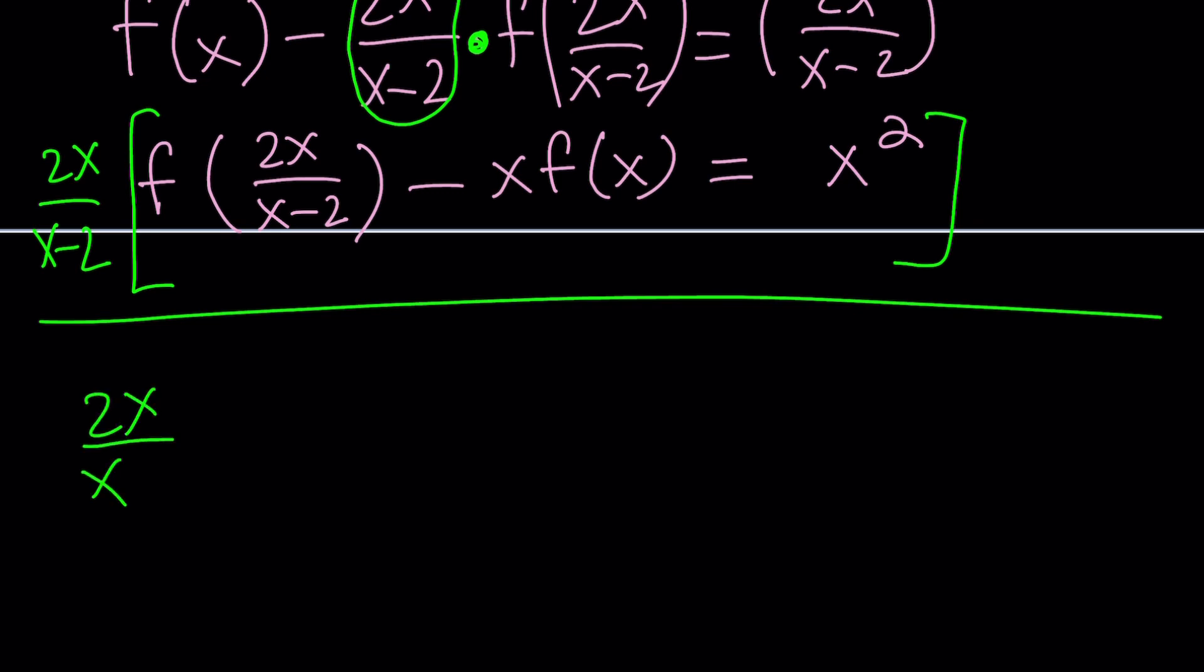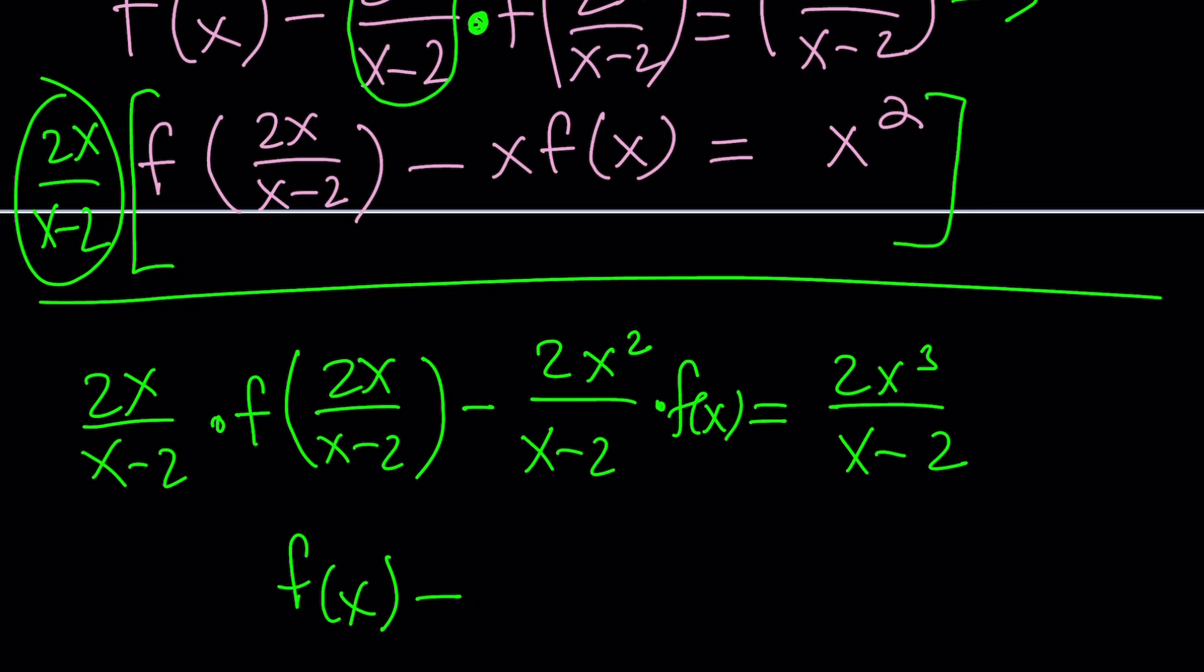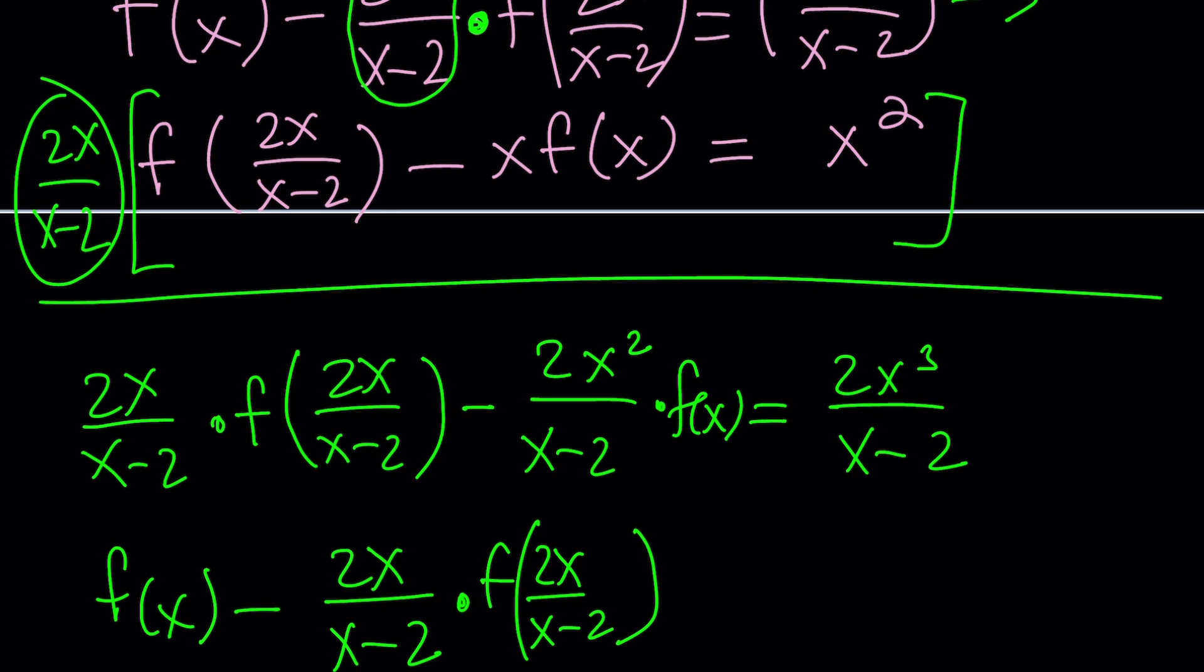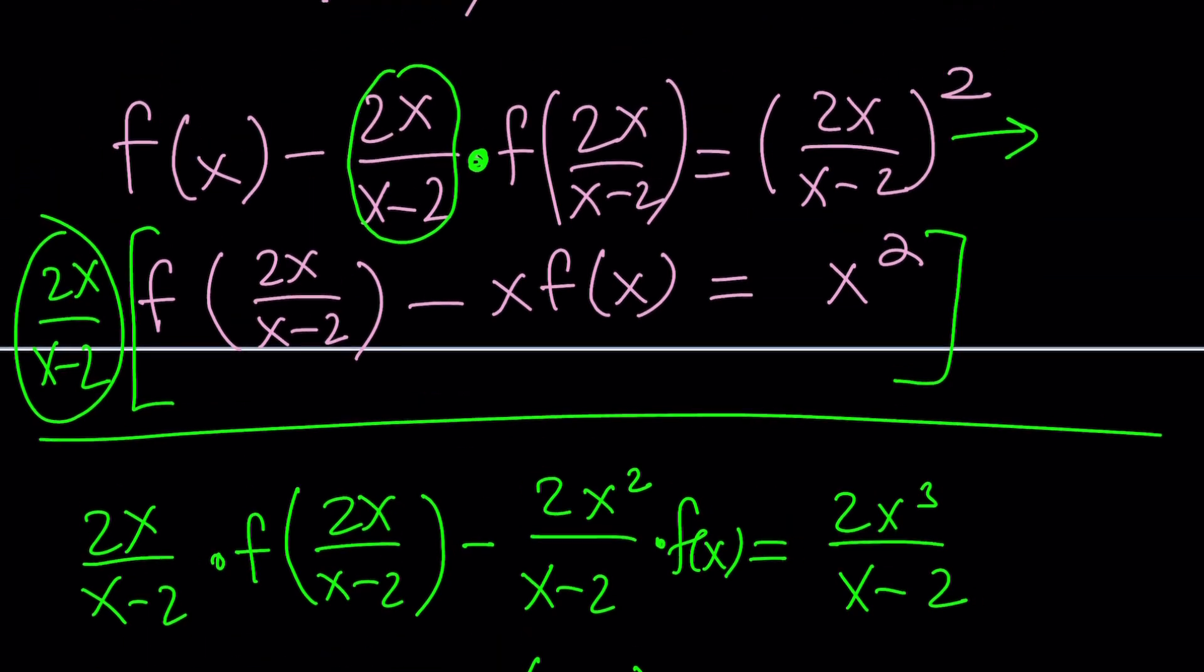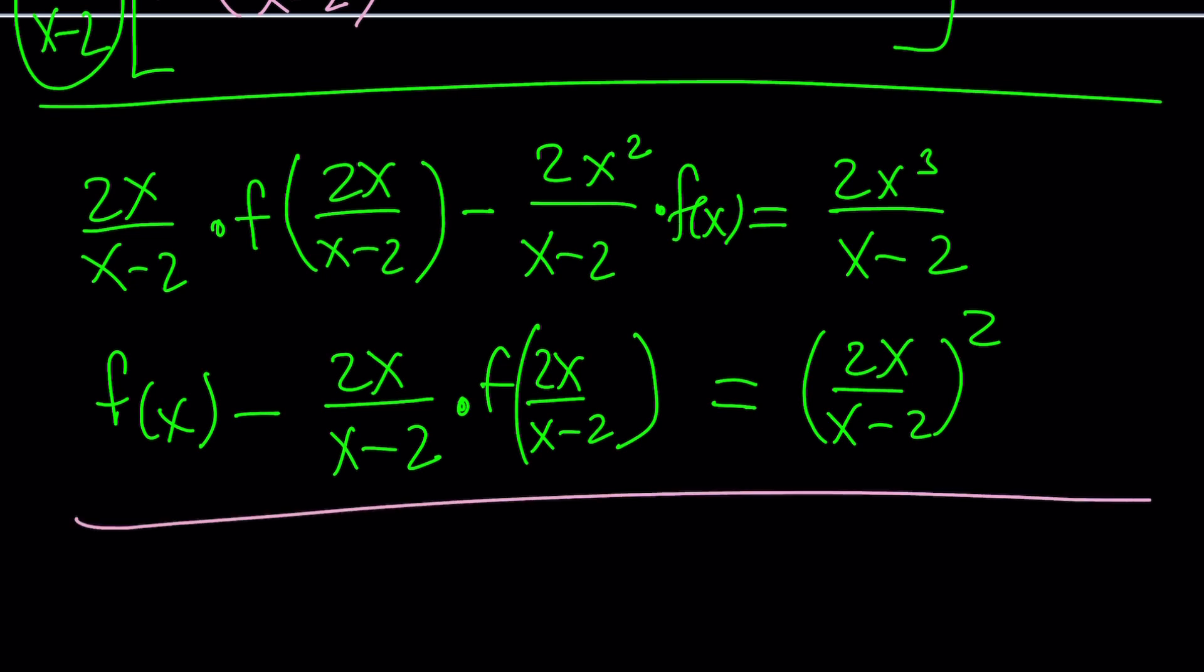We're going to get 2x over x minus 2 times f of 2x over x minus 2 minus 2x squared over x minus 2 multiplied by f of x. And on the right-hand side, we're going to multiply x squared by this, so 2x cubed over x minus 2. So far, so good. Let's just copy the first equation right here. So we're going to get f of x minus 2x over x minus 2 times f of 2x over x minus 2. So you can see that will cancel out.